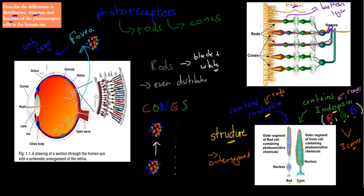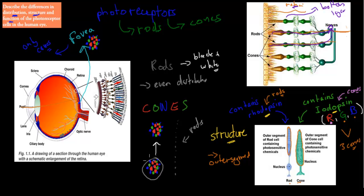So what I've covered so far is two of these things: distribution and structure. Remember, structure — we've got the outer segments looking different, rods have a rod shape, cones have a cone shape, and the different light-sensitive chemicals — rhodopsin in rods and iodopsin in cones. And for distribution — rods are evenly distributed covering the whole retina but are not very dense, whereas cones are very dense but found in clusters with pockets of nothing in between. The biggest cluster is the fovea, which is purely cones.